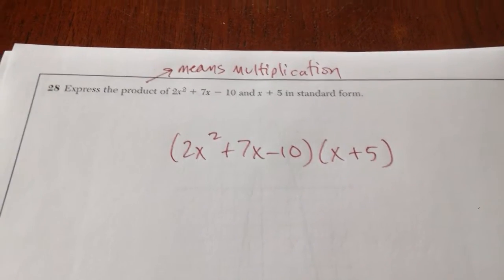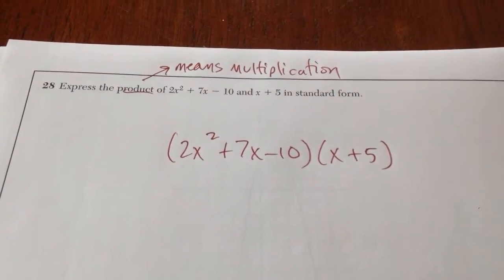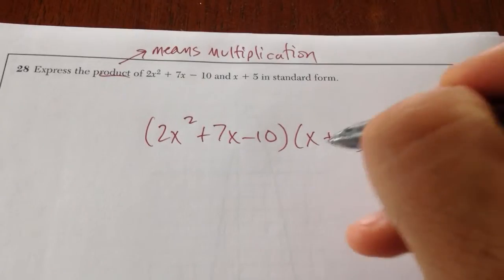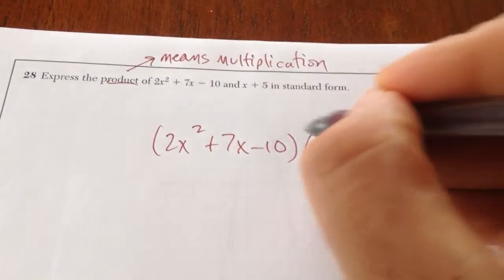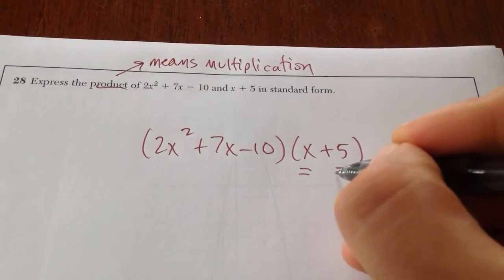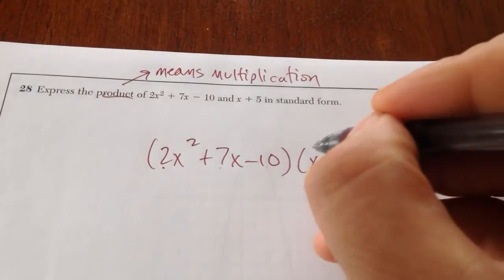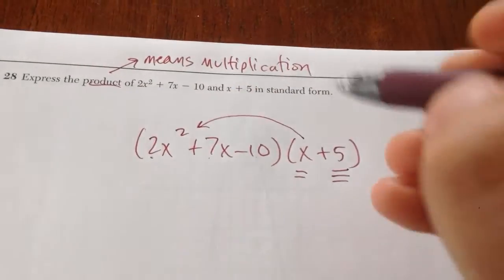Number 28 says express the product of these two polynomials. Product means multiplication. So what I have to do is multiply this term by every single term of this trinomial. And then I have to multiply this term by every single term of this trinomial. Basically, what you're doing is double distribution.